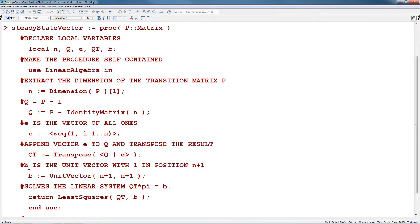B is the unit vector with 1 in position n plus 1. We declare it as UnitVector(n+1, n+1). Finally, we return the solution for the linear system QT times pi equals B using least squares.